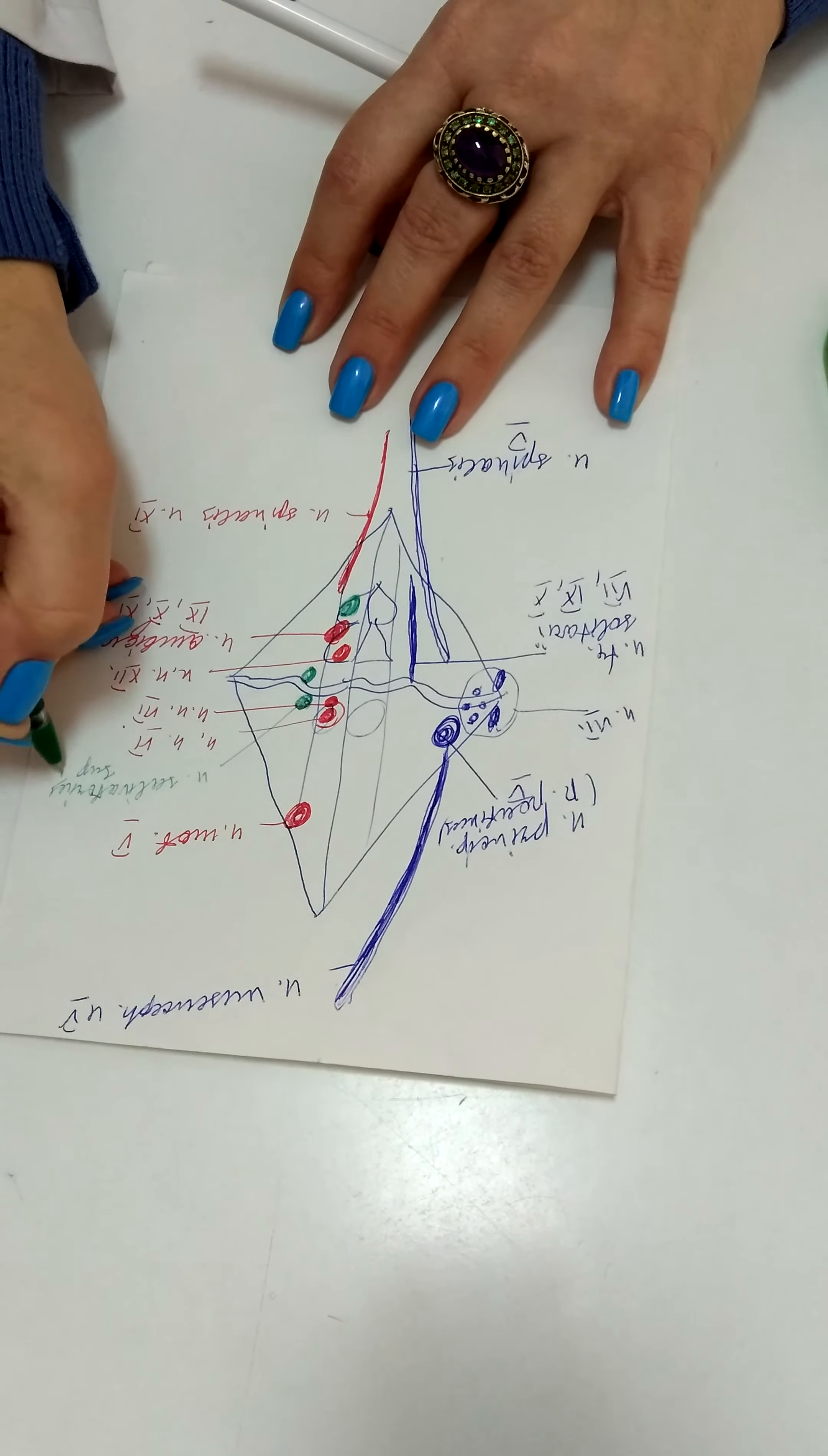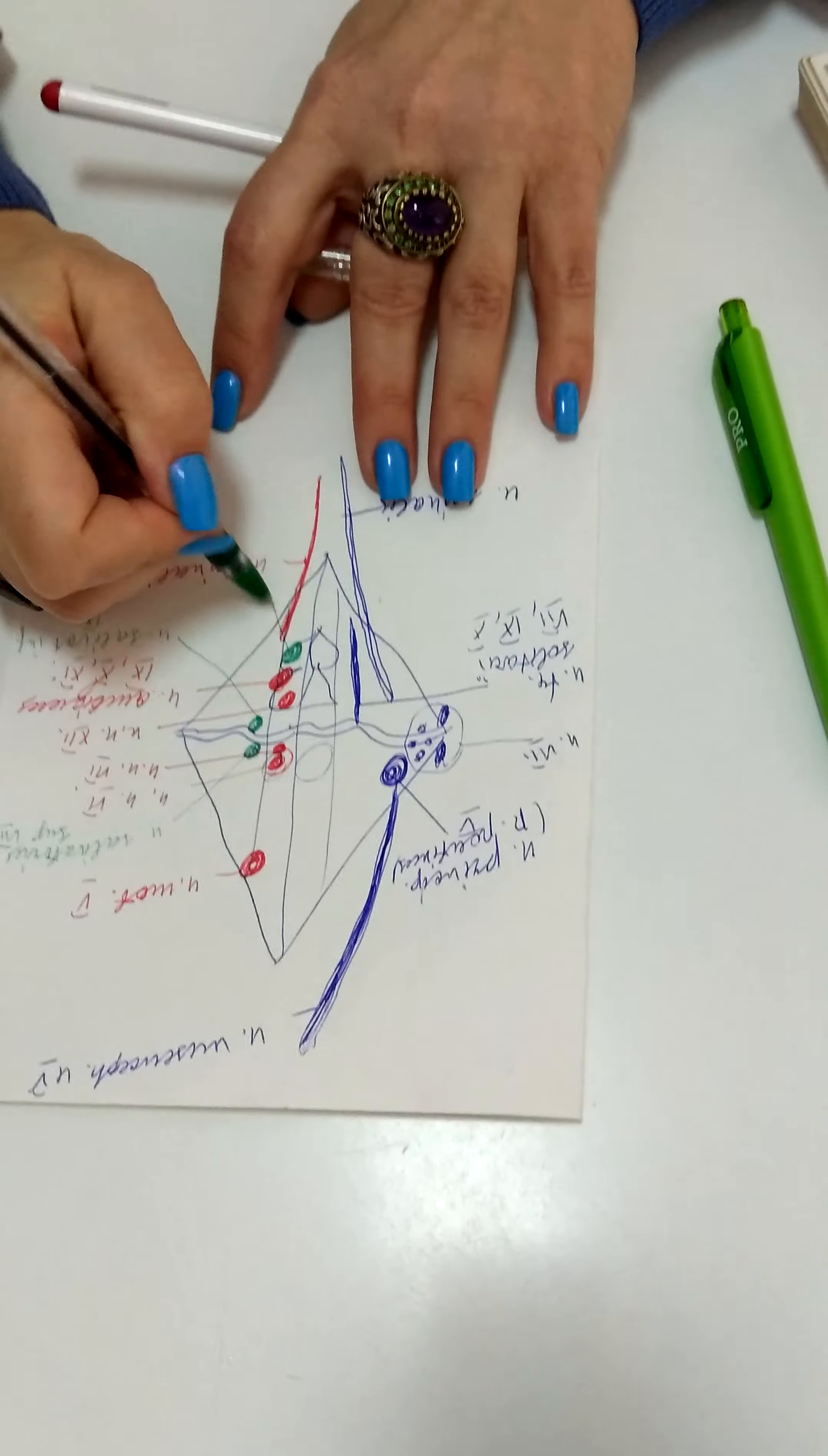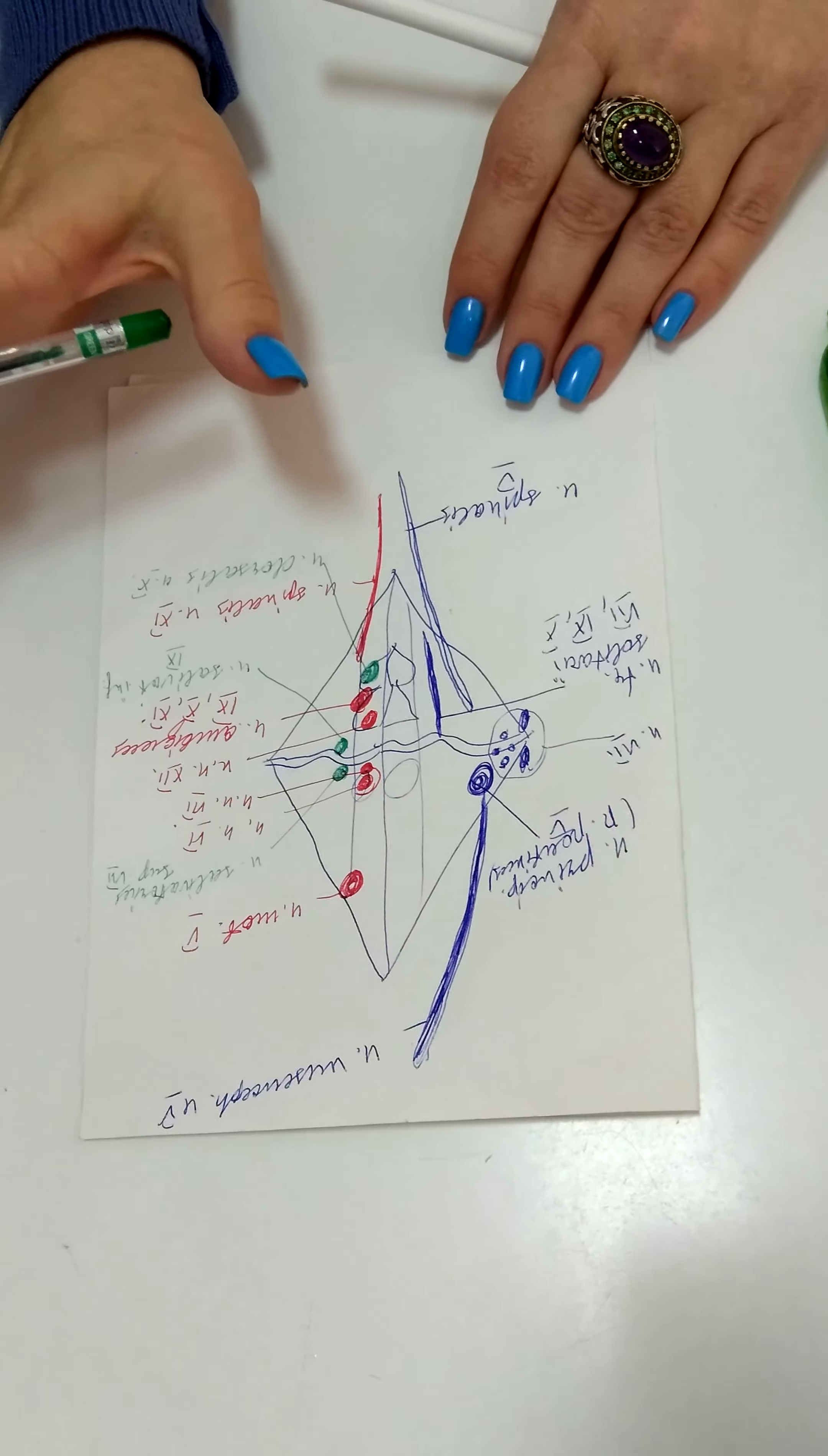Salivatorius superior is the nucleus of facial nerve. Salivatorius inferior is the nucleus of glossopharyngeal nerve. And the lowest nucleus, which locates in trigonum nervi vagi, is nucleus dorsalis nervi vagi or tenth pair. These are all nuclei of rhomboid fossa.